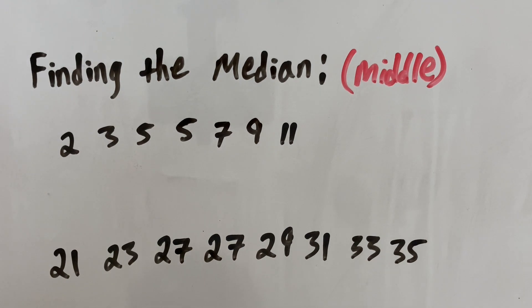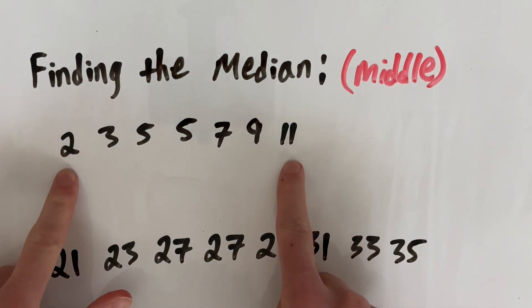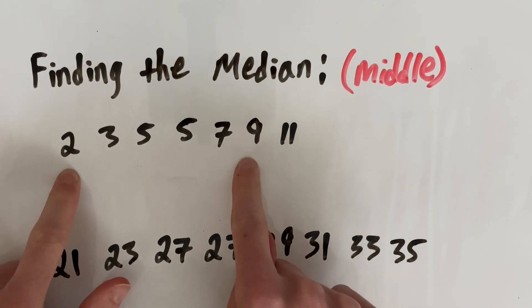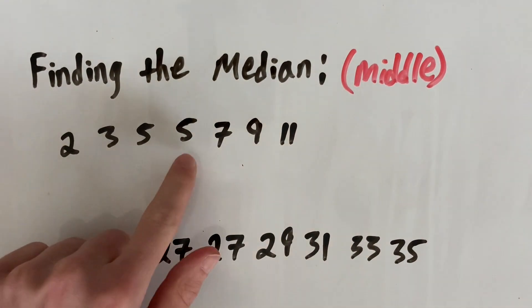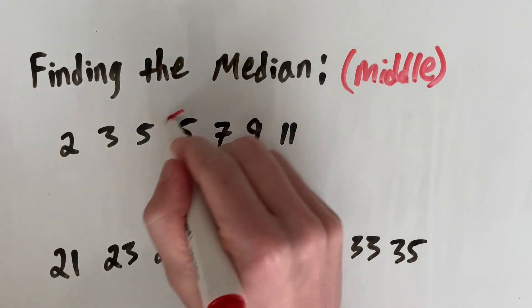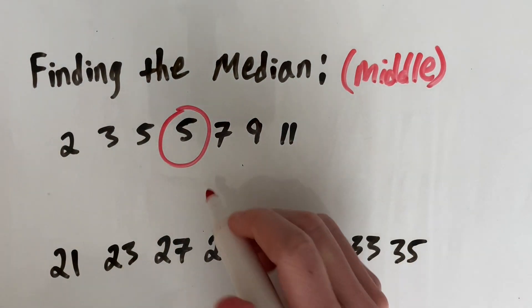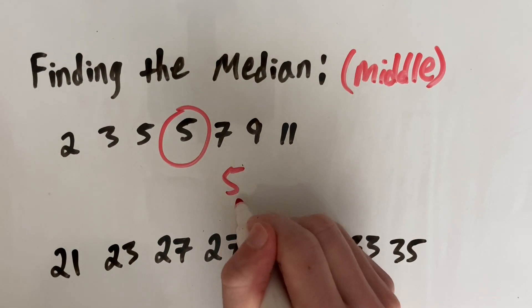I have already done this to save time, so we can now find our middle number. You're going to start at the outside and work your way in. So I'm working my way in, and when I get to the middle, I can see our middle number for dataset 1 is 5. So the median of this dataset is 5.